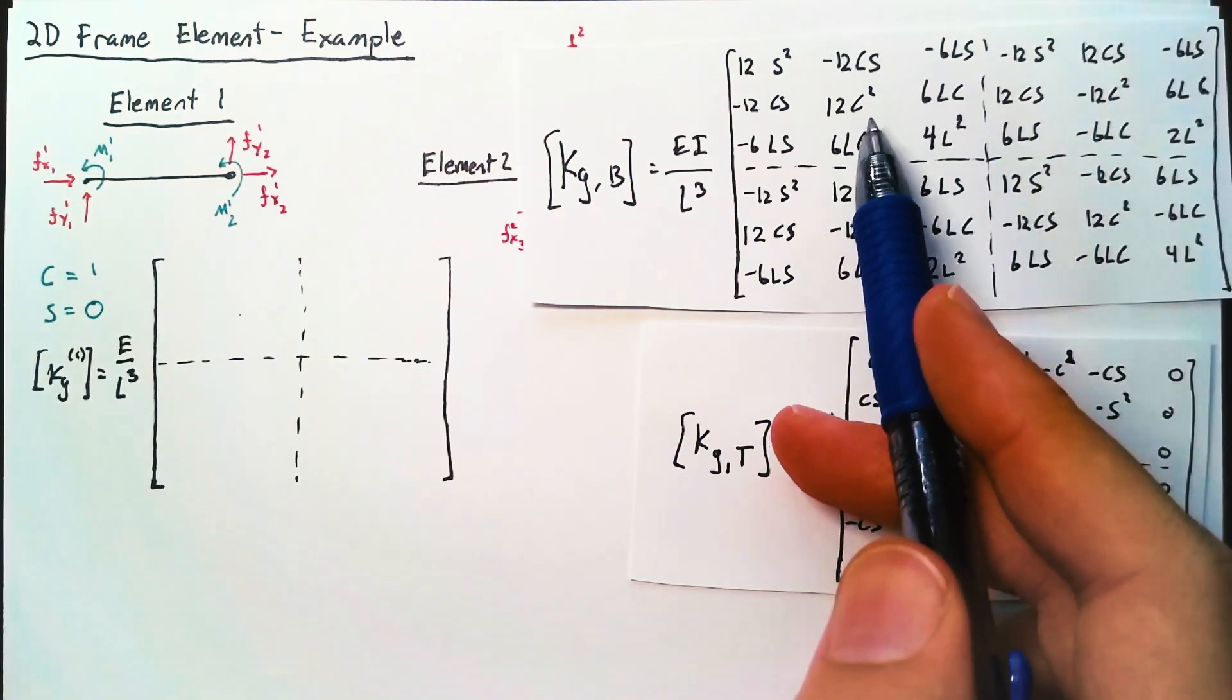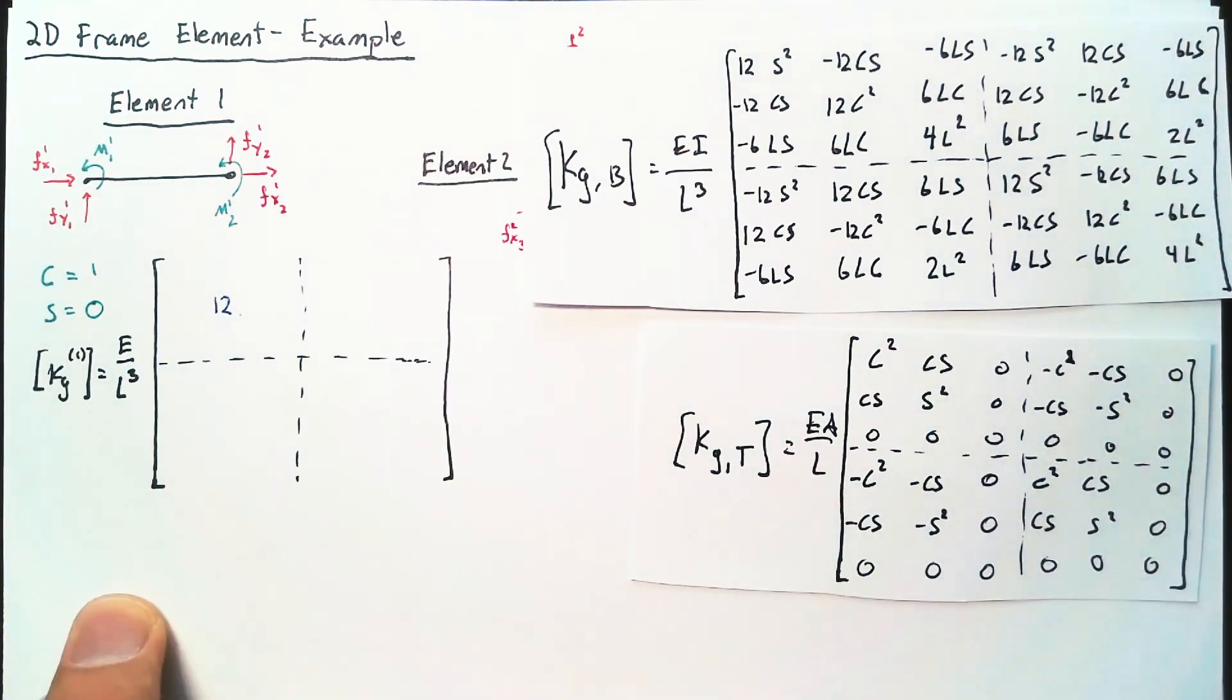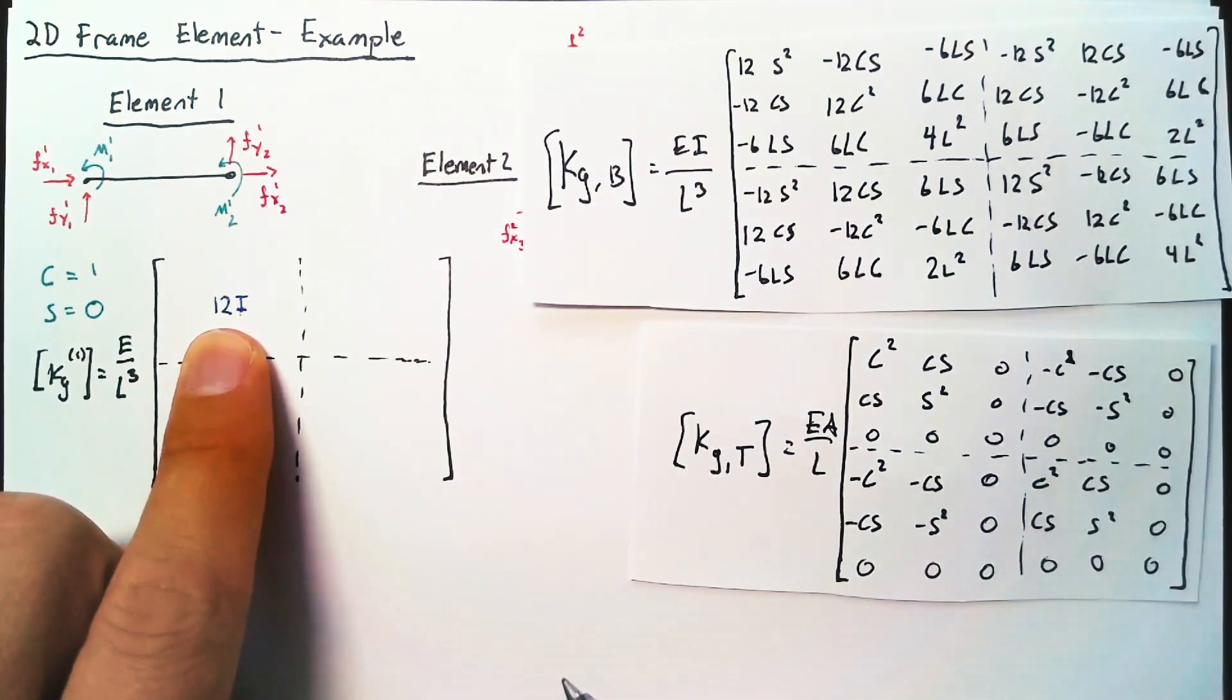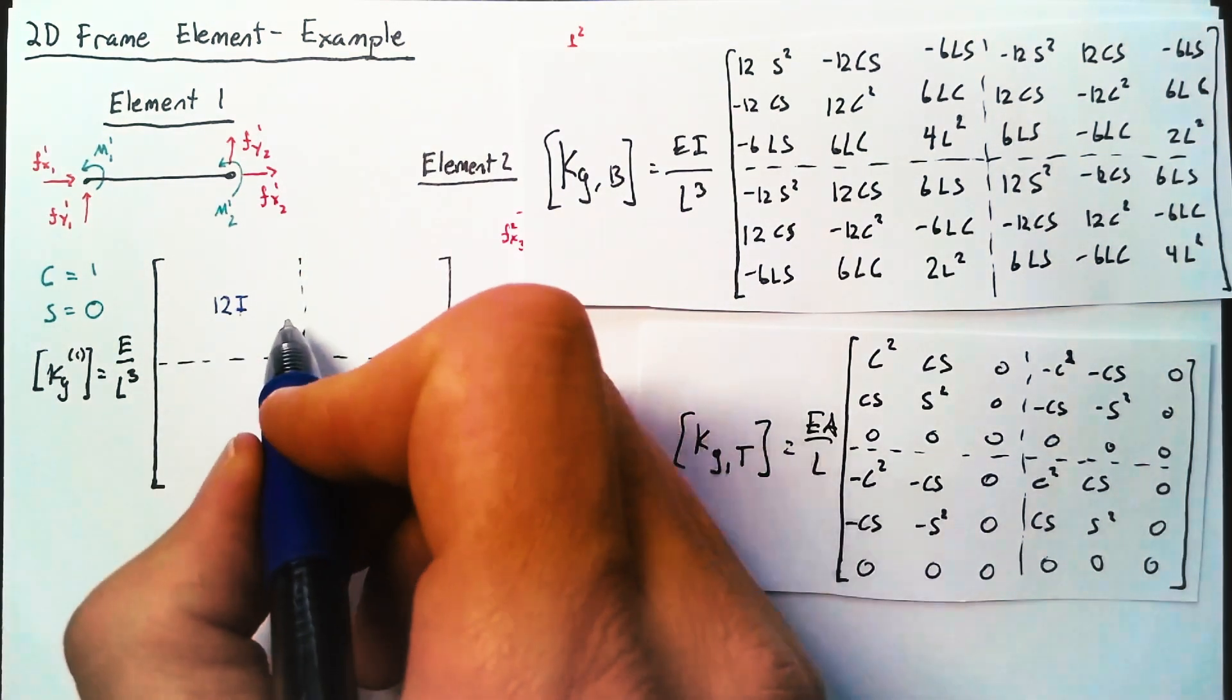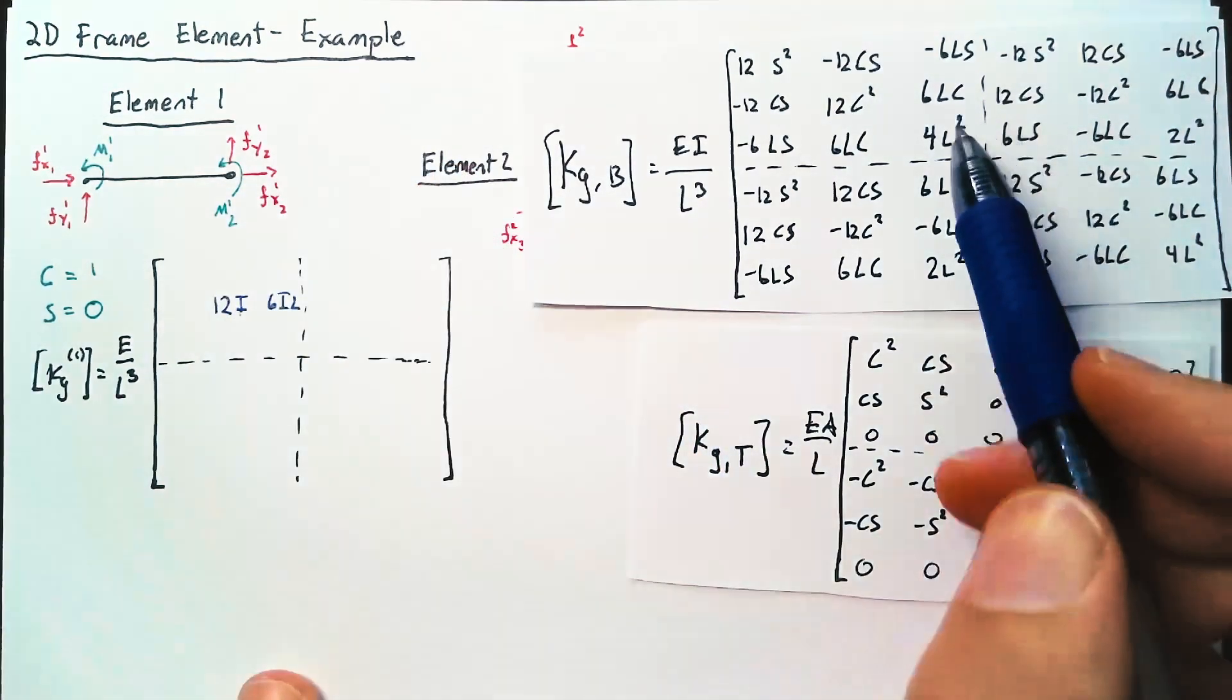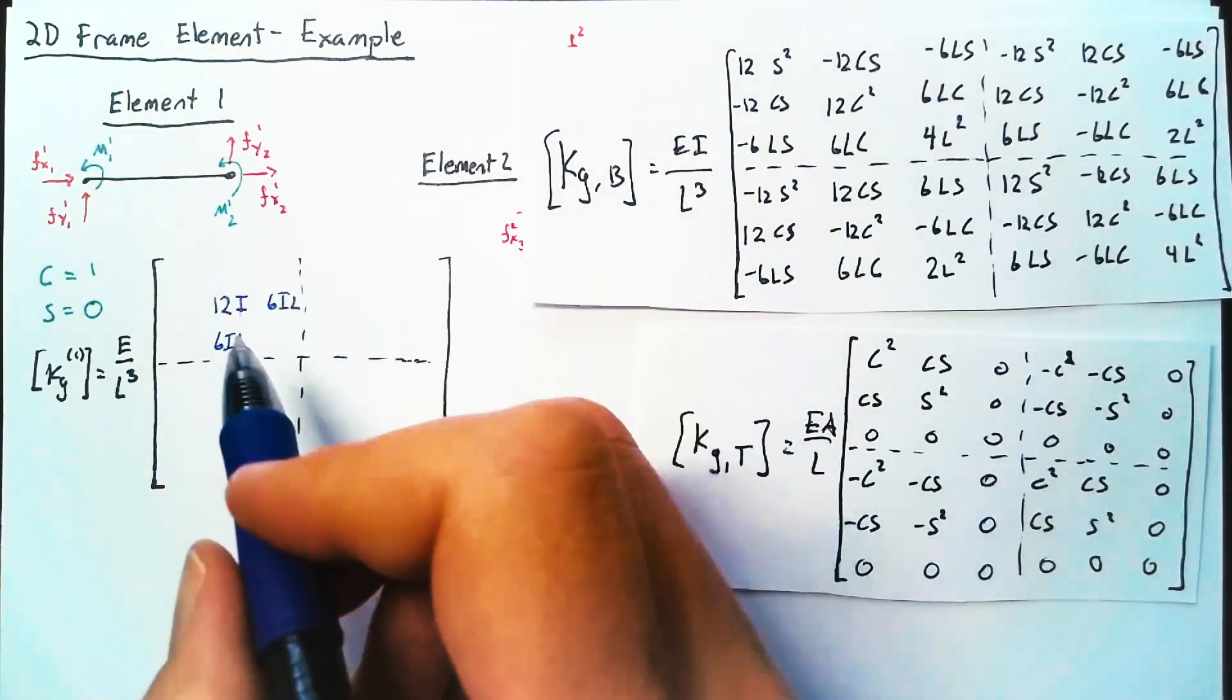So from the beam section, we're going to have 12 in the middle, and we need to multiply by this I. And so we get 12I in the 2,2 spot. Then we'll end up with 6IL in this location, and 6IL in the 3,2 spot,